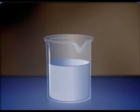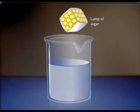What will happen if we now add a lump of sugar to the water? A lump of sugar is composed of many individual sugar molecules. And even as a solid lump, the individual sugar molecules are in motion.